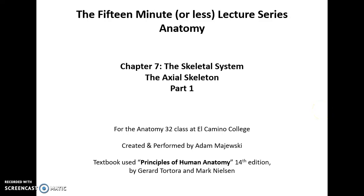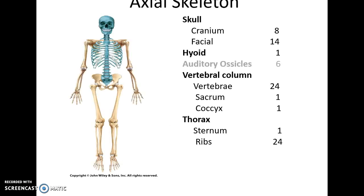Fifteen minute or less lecture series: human anatomy, chapter seven, the skeletal system, the axial skeleton, part one. The axial skeleton is the bones that lie along our midline, the central bones that do not include our limbs. This includes the 22 bones of the skull, the hyoid bone in the throat, the auditory ossicles in the middle ear — though we will not talk about those — the vertebral column bones, and the bones of the thorax or thoracic cage.